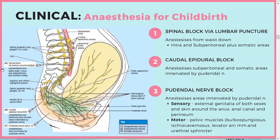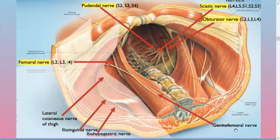The clinical aspect is where you'll do anesthesia for childbirth. There are three options: the spinal block, which anesthetizes from the waist down; the caudal epidural block, which anesthetizes somatic areas innervated by the pudendal nerve and subperitoneal structures; and the pudendal nerve block, which only anesthetizes the external genitalia and perineum sensorily, and the pelvic muscles for motor function.